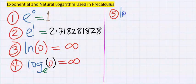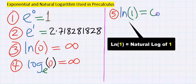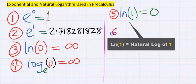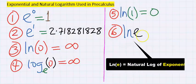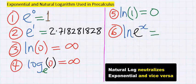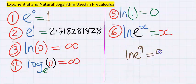Next, ln one is equal to zero. Next, ln exponential x is equal to x, that is ln exponential nine is equal to nine.